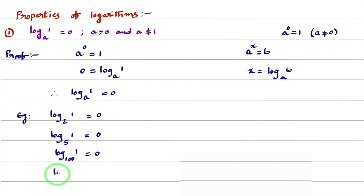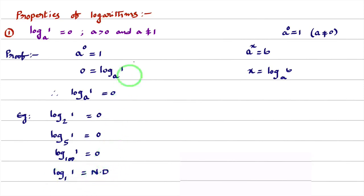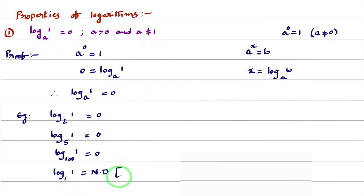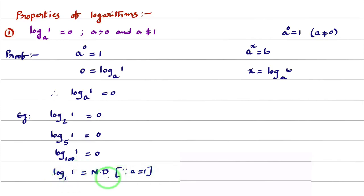Similarly, consider log 1 base 1. Its value is not defined. This formula works only when A is greater than 0 and A is not equal to 1. Here, the base equals 1, and since A cannot equal 1, log 1 base 1 is not defined.